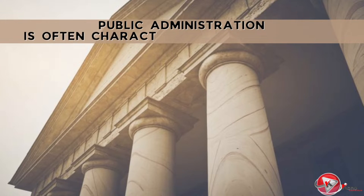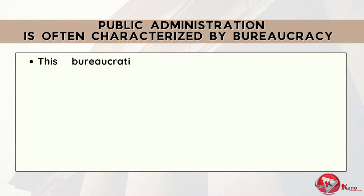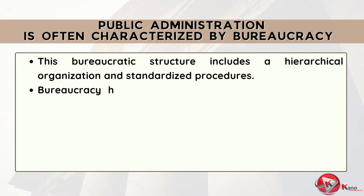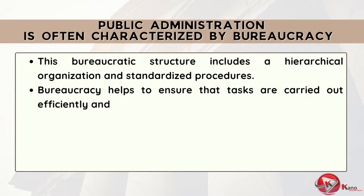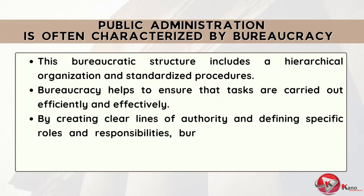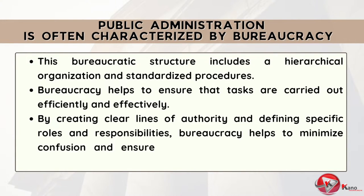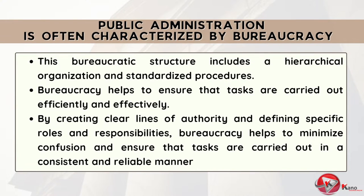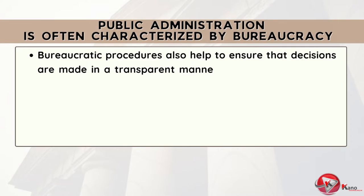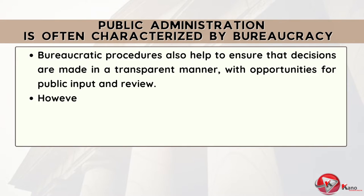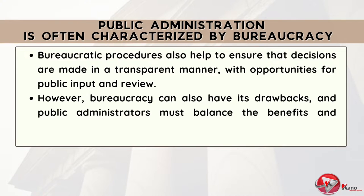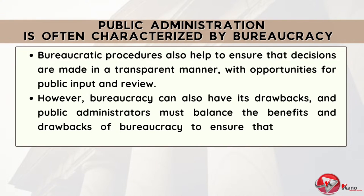Public administration is often characterized by bureaucracy. This bureaucratic structure includes a hierarchical organization and standardized procedures. Bureaucracy helps to ensure that tasks are carried out efficiently and effectively by creating clear lines of authority and defining specific roles and responsibilities. This helps to minimize confusion and ensure that tasks are carried out in a consistent and reliable manner. Bureaucratic procedures also help to ensure that decisions are made in a transparent manner, with opportunities for public input and review. However, bureaucracy can also have its drawbacks, and public administrators must balance the benefits and drawbacks of bureaucracy to ensure that it is used appropriately.